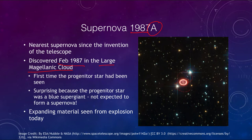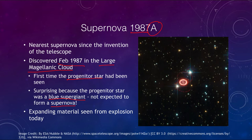SN 1987A was very important because it was the first time the progenitor star was seen before the supernova exploded — images taken of this region previously showed the star. What was confusing to many astronomers was that the star was a blue supergiant, not the type expected to form a supernova. Astronomers had previously thought it would be red supergiants that would form supernovae at the end of their lives, so this is still causing us to better understand how supernovae work.